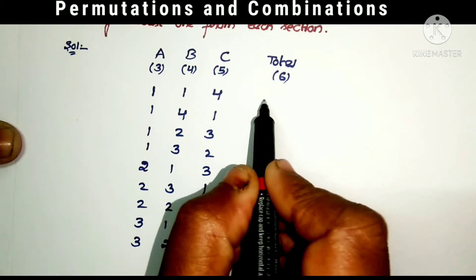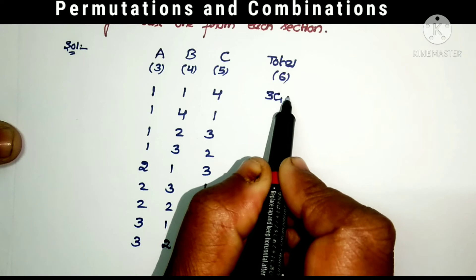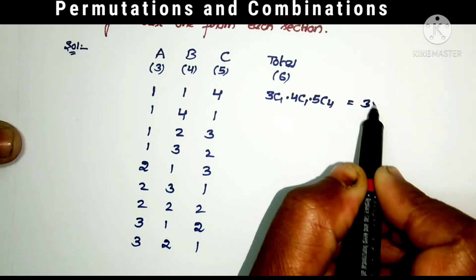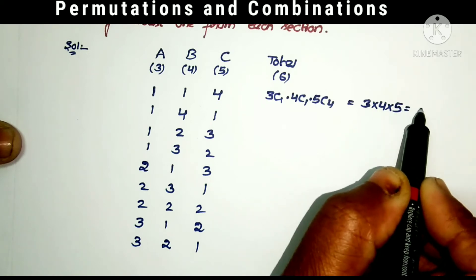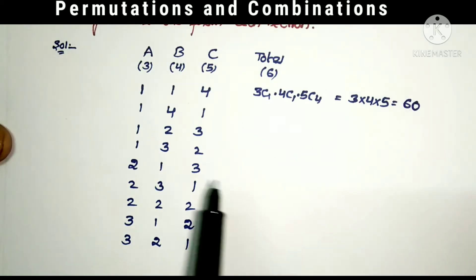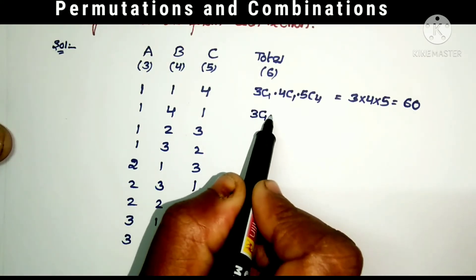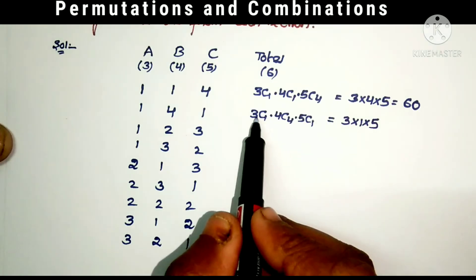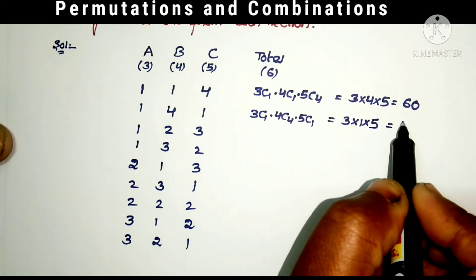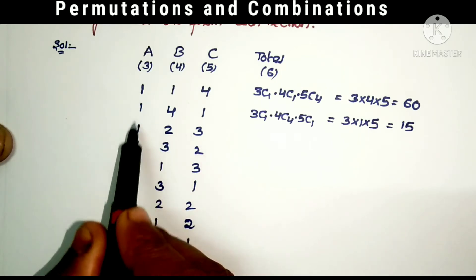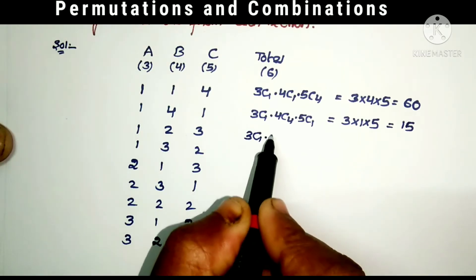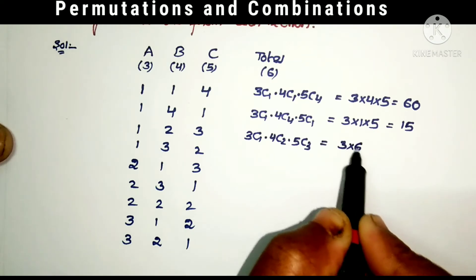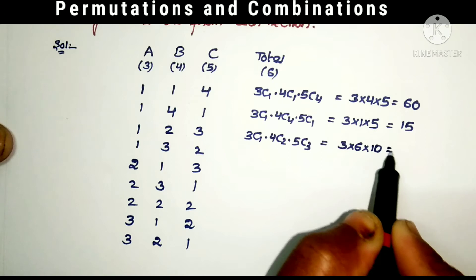Now taking the combinations. The first combination is 3C1 × 4C1 × 5C4, which equals 3 × 4 × 5 = 60. The second combination is 3C1 × 4C4 × 5C1, which equals 3 × 1 × 5 = 15. The third combination is 3C1 × 4C2 × 5C3, where 4C2 = 6 and 5C3 = 10, giving 3 × 6 × 10 = 180.